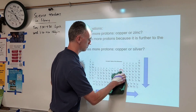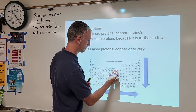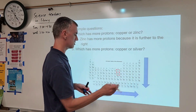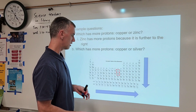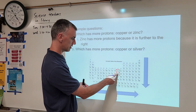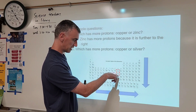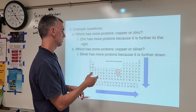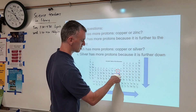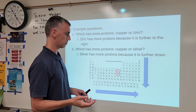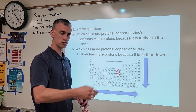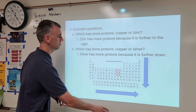Let's compare copper and silver. We once again need to ask which one is closest to the bottom-right corner. Now, they are in the same group but different periods. Silver is in a period that's closer to that corner — it's further down, basically just closer. They are the same distance in the horizontal direction, but silver is further down. So silver would have more protons.